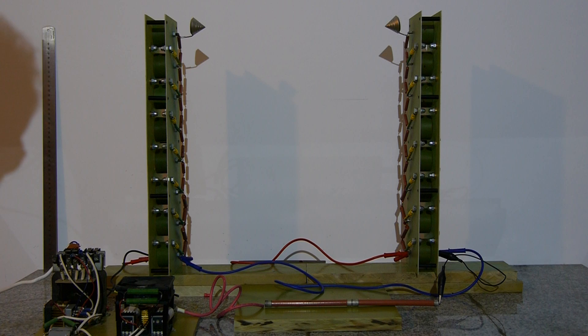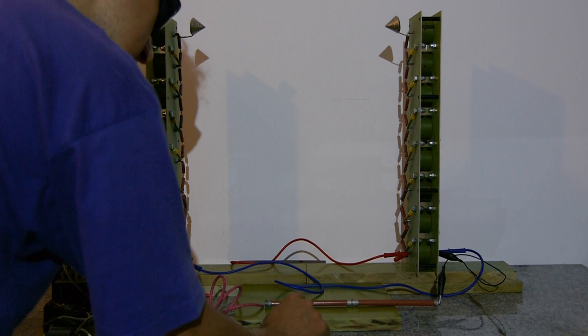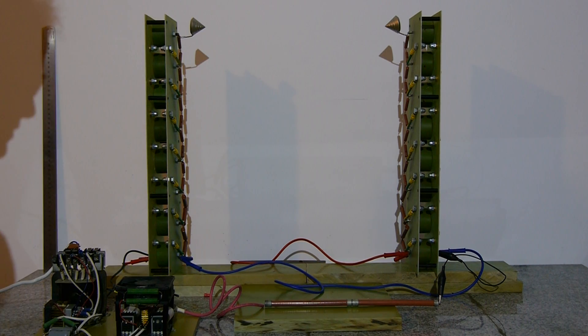I have used a flyback transformer powered by a ZBS driver at approximately 28 volts to generate about 30 kilovolts of high voltage, which is passing through these resistors. Each are 680 kilo-ohms, so about 1.3 mega-ohms in series with a flyback.